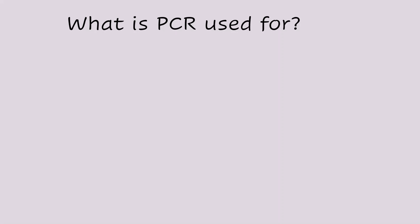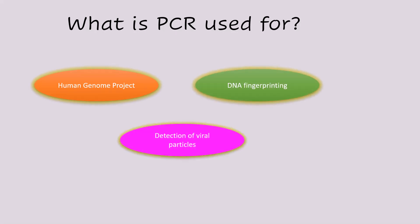The amplified DNA segment produced by PCR can be used in a wide range of processes such as the human genome project, in DNA fingerprinting, for detection of viral particles, for example detection of COVID-19, and in diagnosis of genetic disorders.